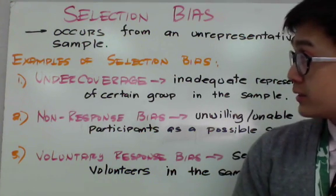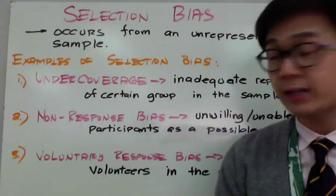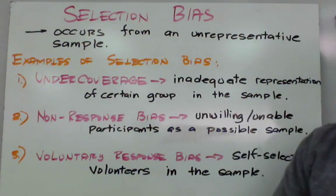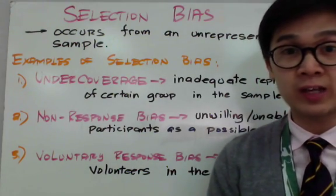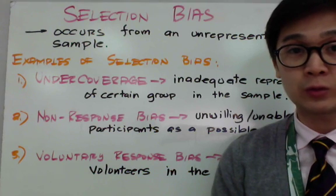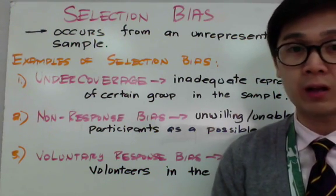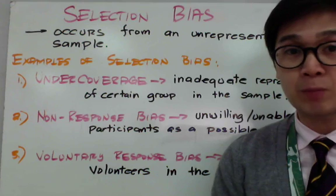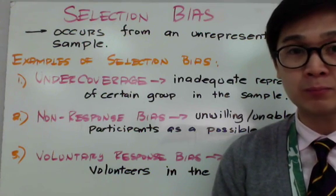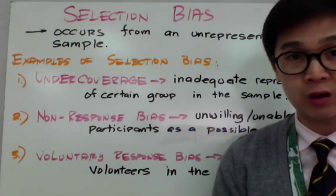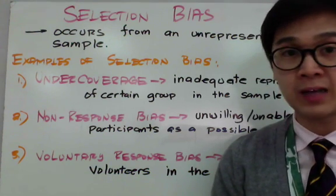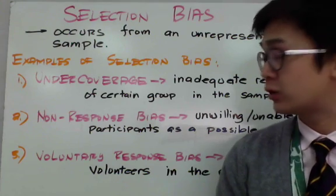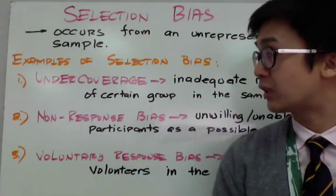The second example of selection bias is non-response bias. It involves unwilling or unable participants as a possible sample. Examples include surveys done using phone calls or through mail, because there is a possibility that people will not return calls or answer, and they will represent the non-response bias of your sample.